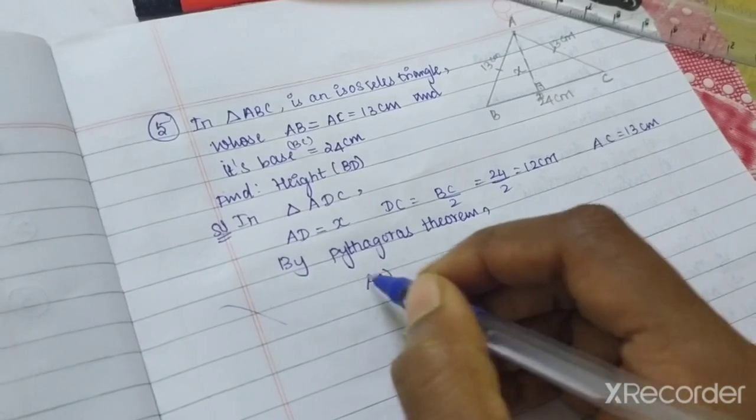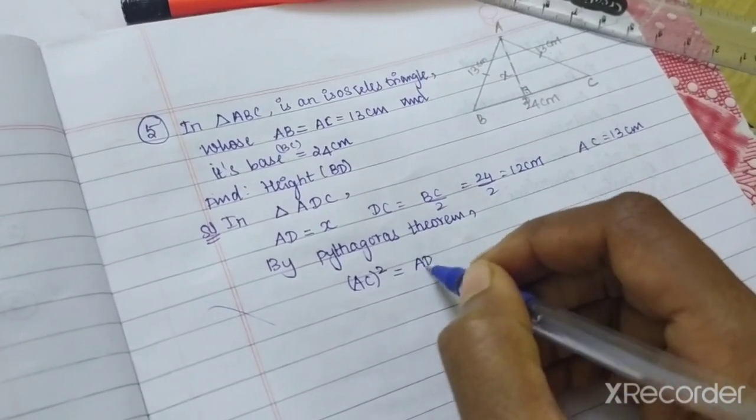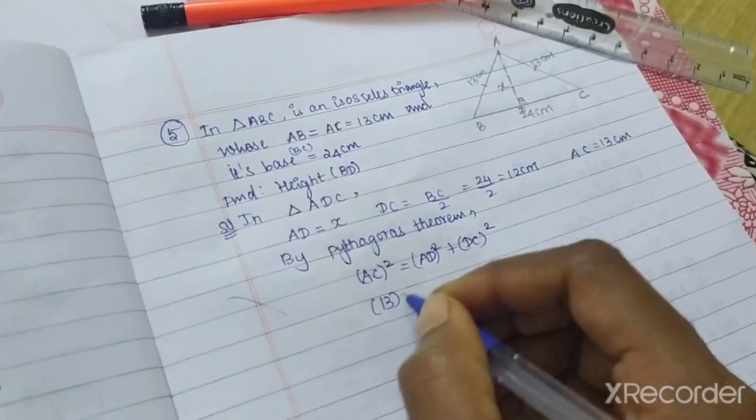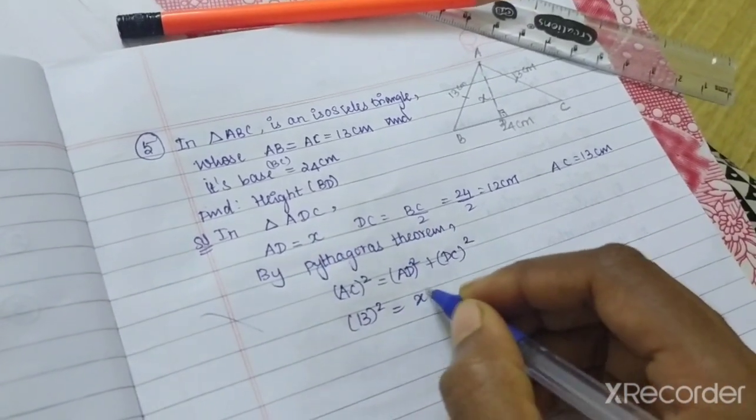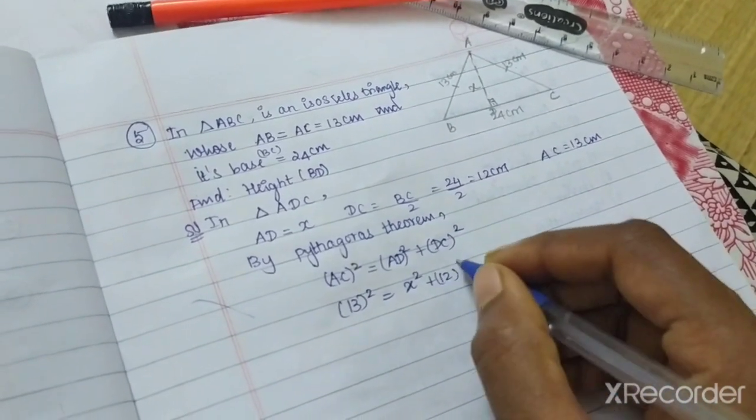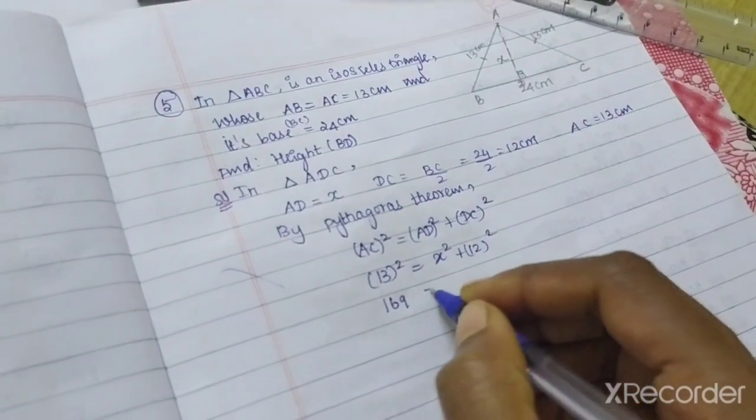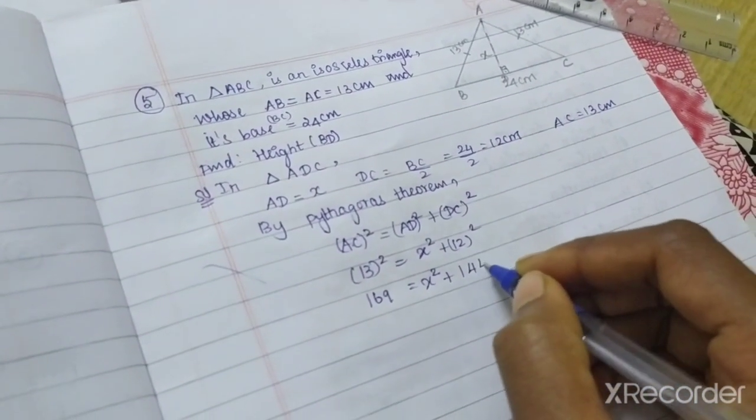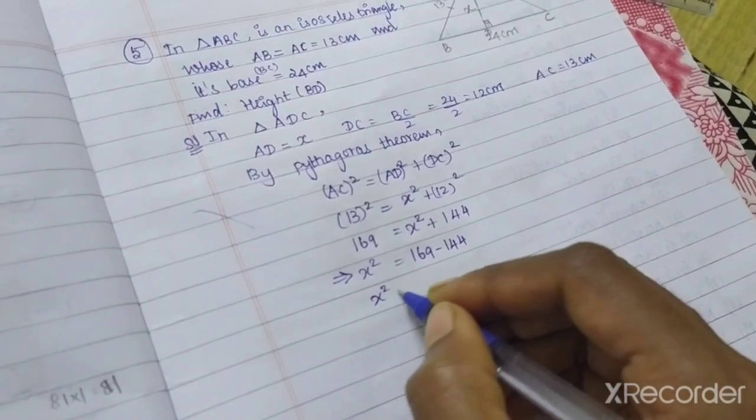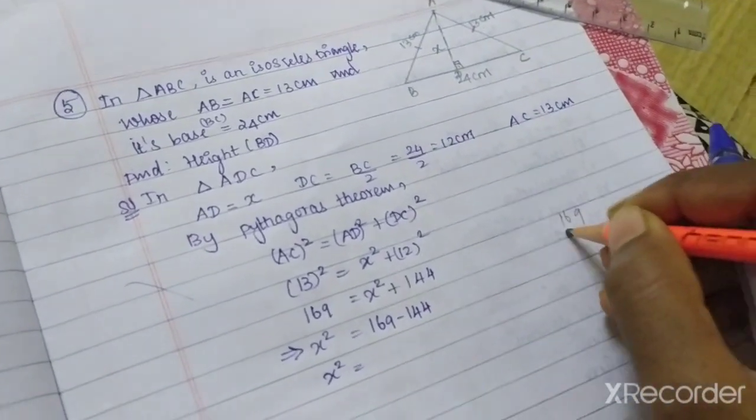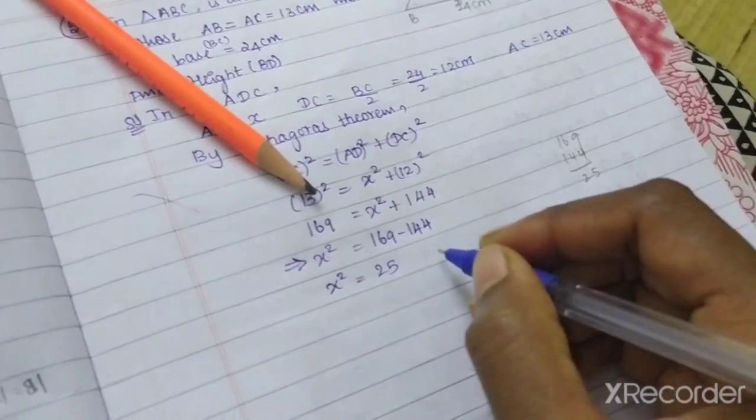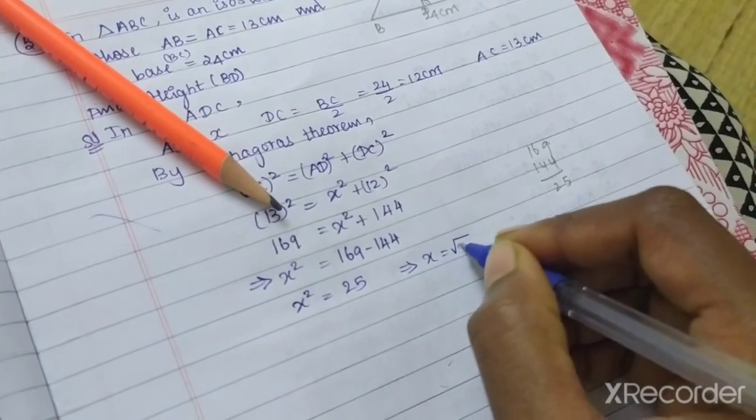Hypotenuse square is AC square, and AD square plus DC square. AC is 13 square, AD is X square, DC is 12 square. So 169 equals X square plus 144. X square equals 169 minus 144, so 25.